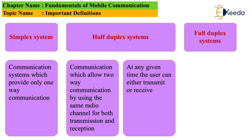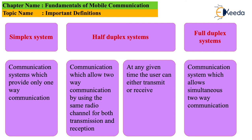Full-duplex systems. Communication systems which allow simultaneous two-way communication are known as full-duplex systems. The best examples are landline telephone systems and mobile communication systems, in which we can simultaneously transmit and receive voice signals.